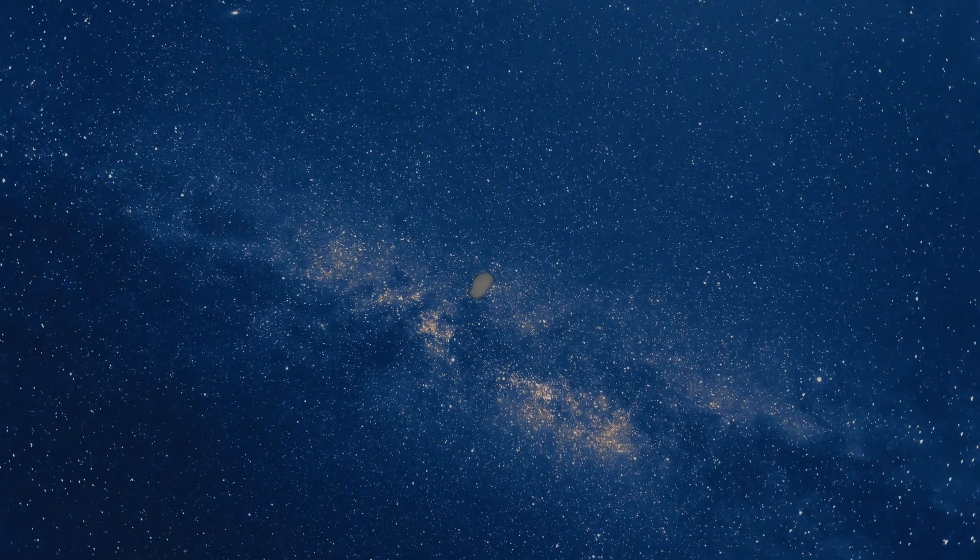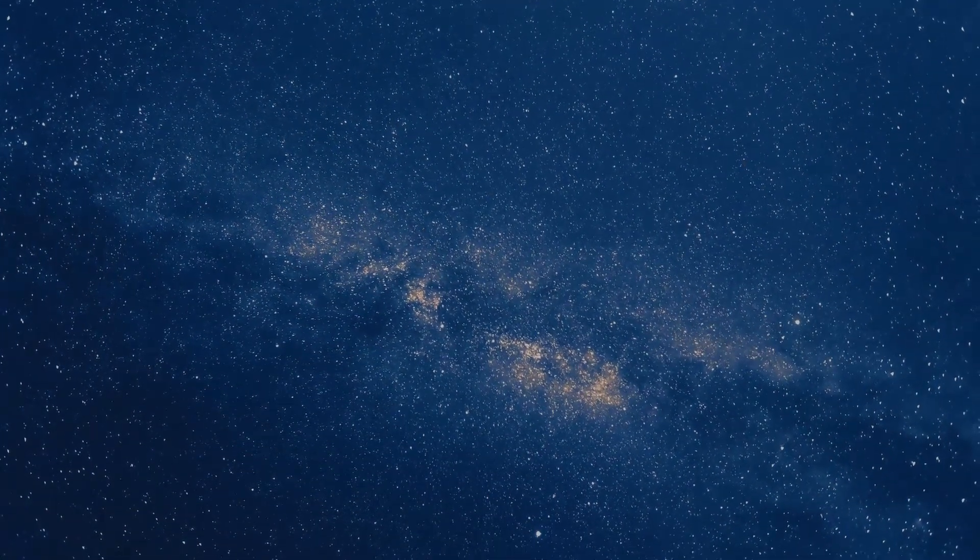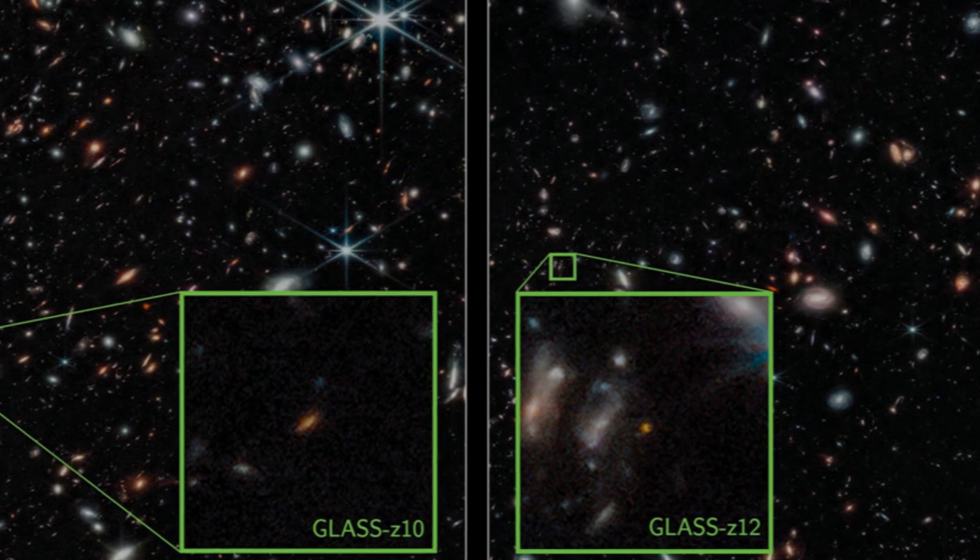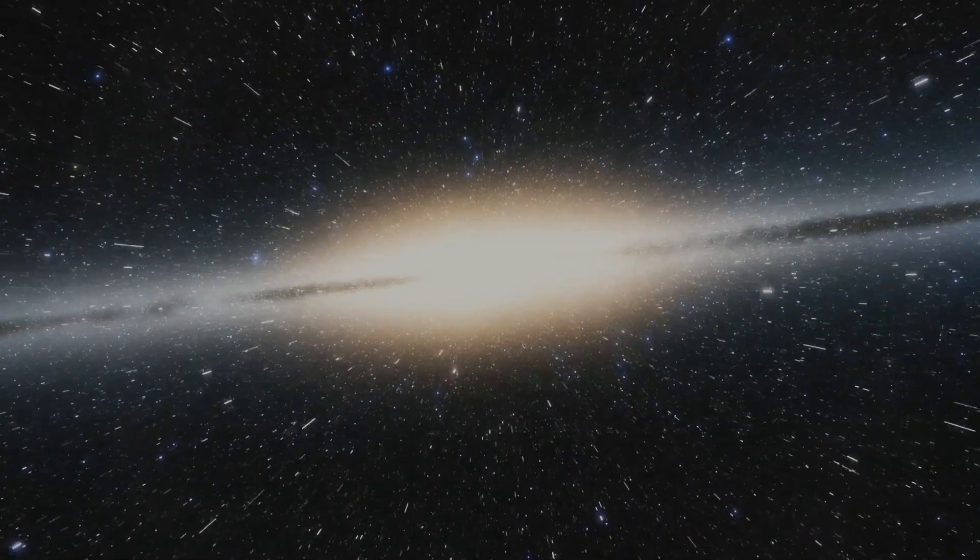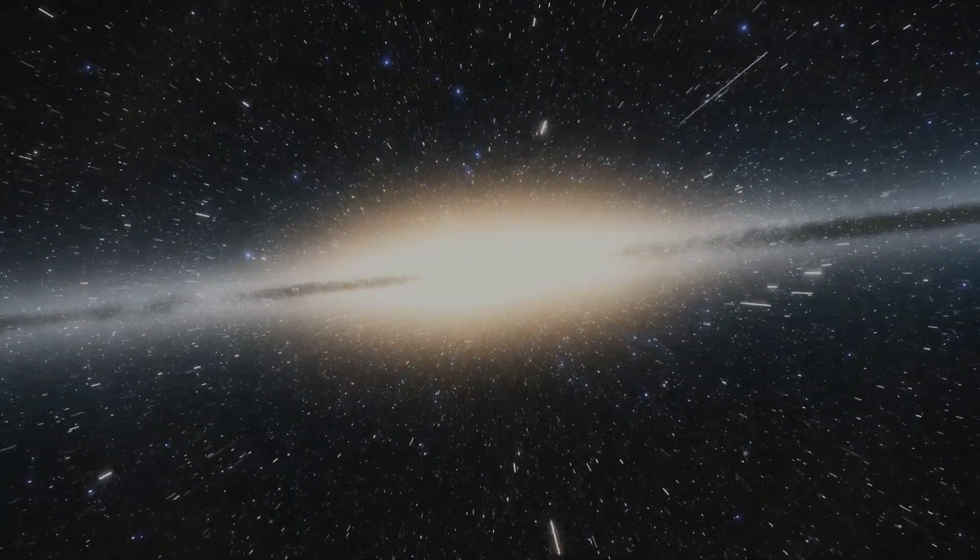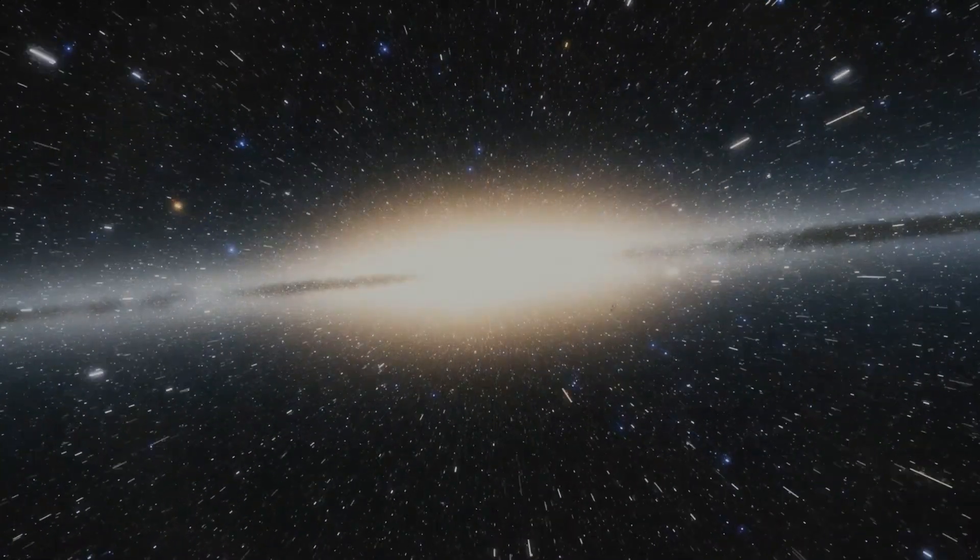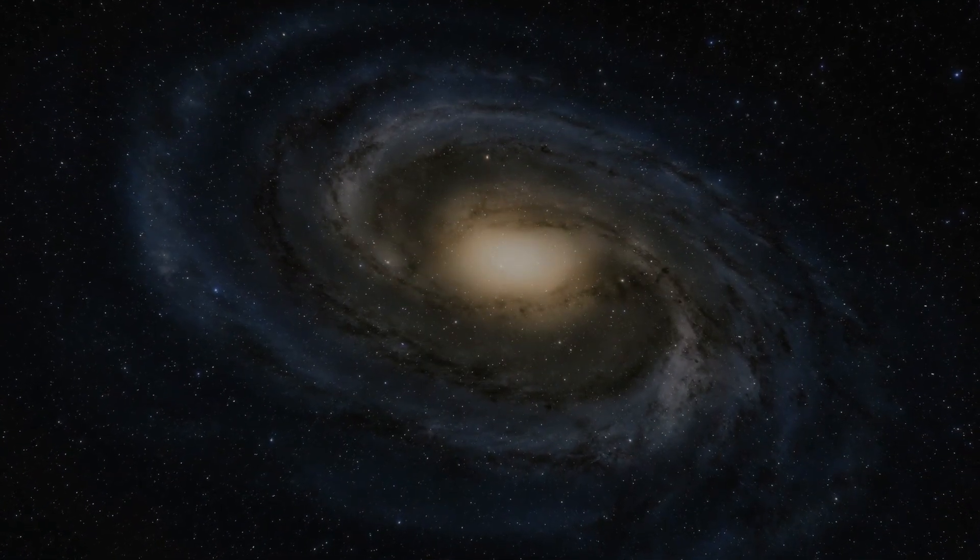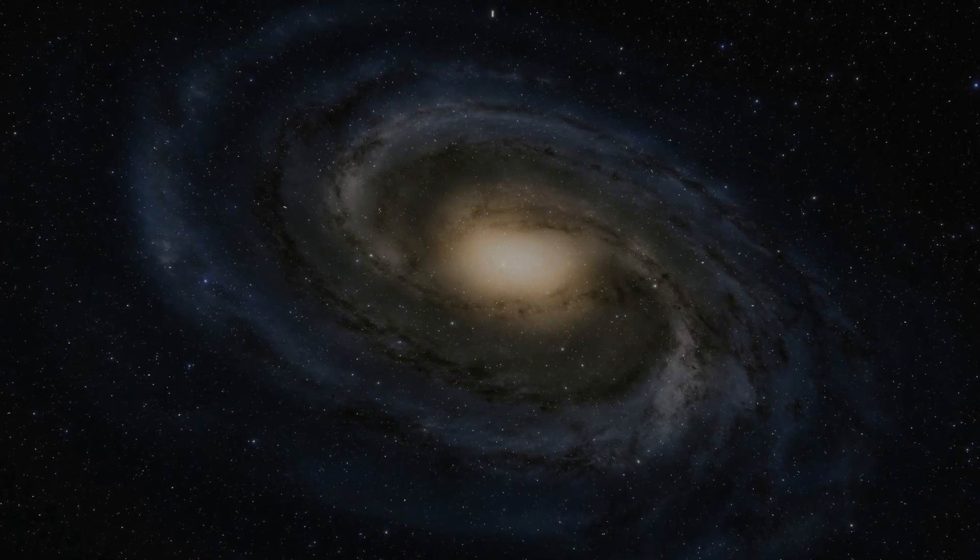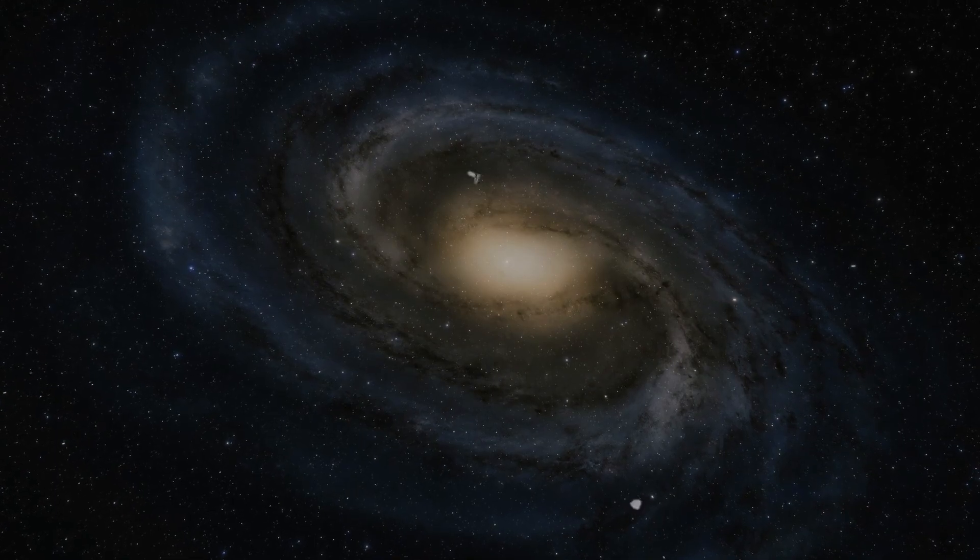In this context, GLASS-Z12 represents the Grism Lens Amplified Survey from Space, with Z12 denoting the galaxy's redshift value. This redshift value suggests that the universe came into existence approximately 300 to 400 million years after the Big Bang. The revelation of GLASS-Z12 has sparked excitement among scientists, and it has been swiftly followed by the identification of even more ancient and enigmatic galaxies.